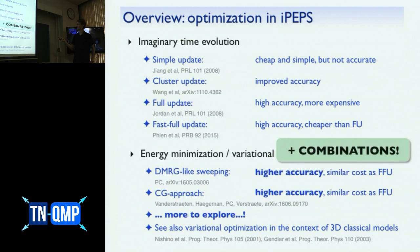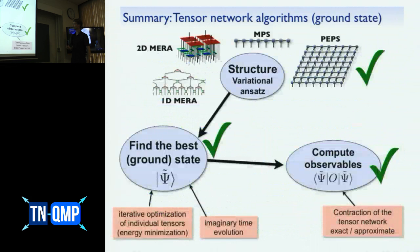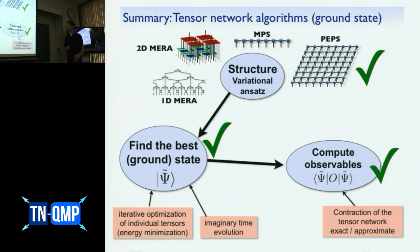The optimal practical approach combines methods: use simple update to get a good initial state, then add a few variational optimization steps; or use full update with a large time step for initialization followed by variational optimization. There is also the option of two-site optimization, as in DMRG, where you optimize two tensors at once — useful for dynamically increasing bond dimension or when working with symmetries.